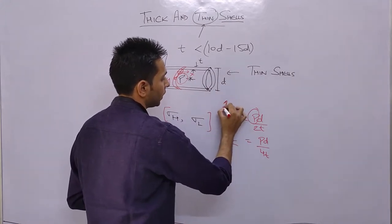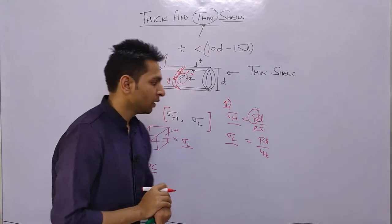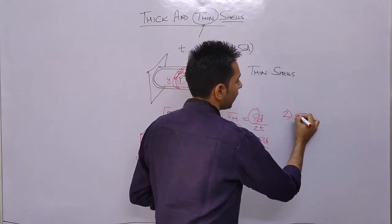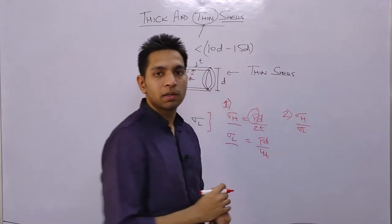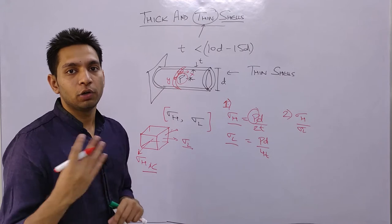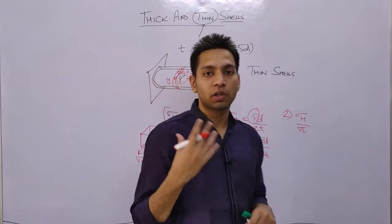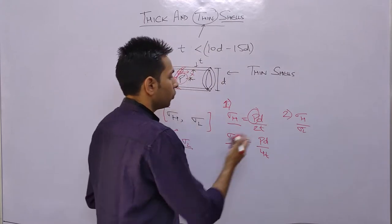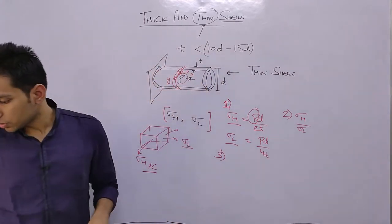The first kind of question asks you to find hoop stress and longitudinal stress. The second kind asks you to find the ratio of hoop stress to longitudinal stress. This can be easily done by dividing the two formulas — we get a ratio of 2. So sigma hoop is always greater than sigma longitudinal.